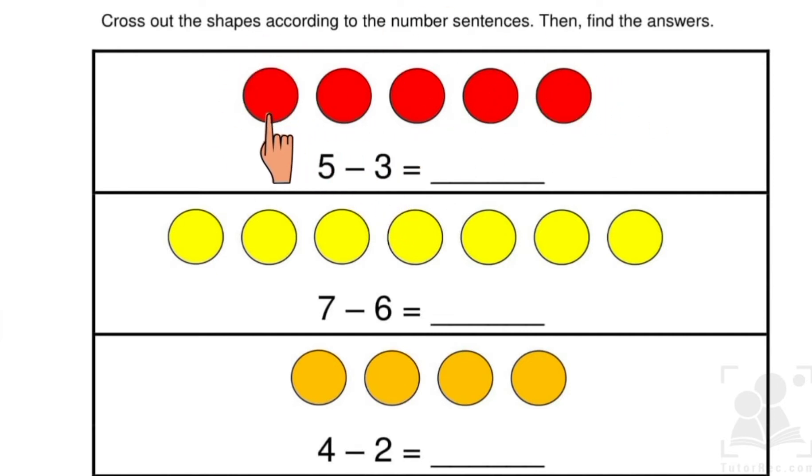One, two, three, four, five. So three is subtracting from five. We will cut three balls. One, two, three. Okay, the rest we will count. One, two. Two is our answer. Two.